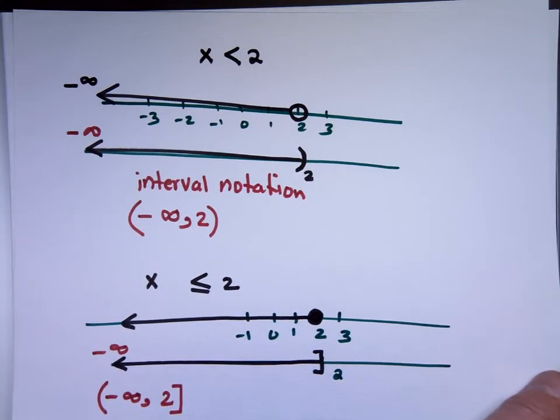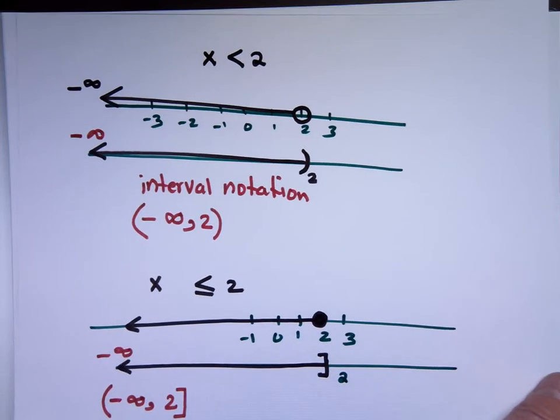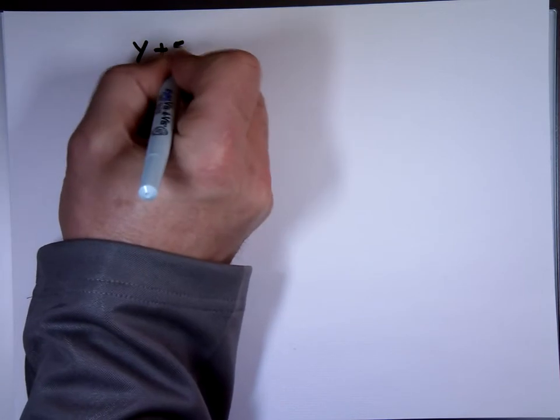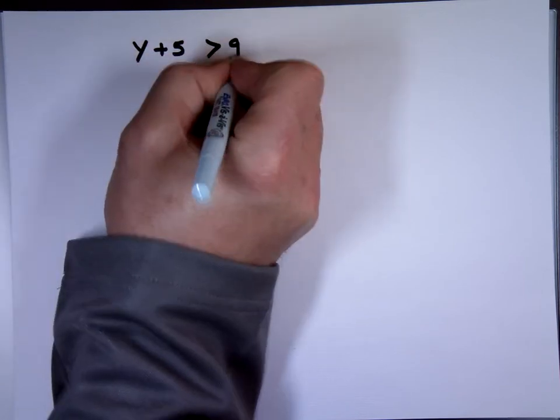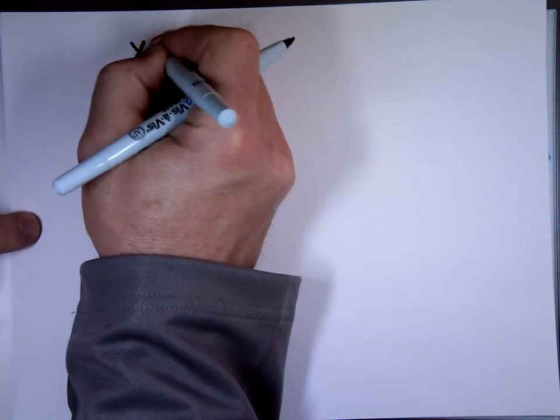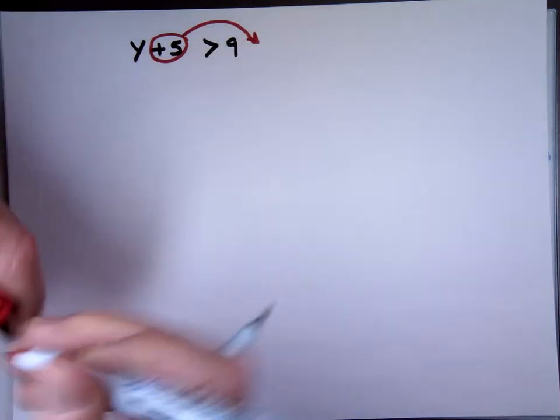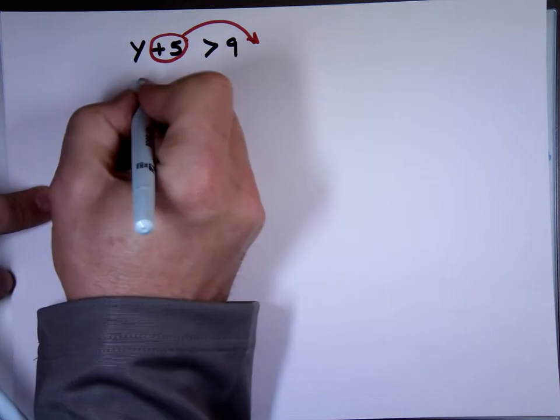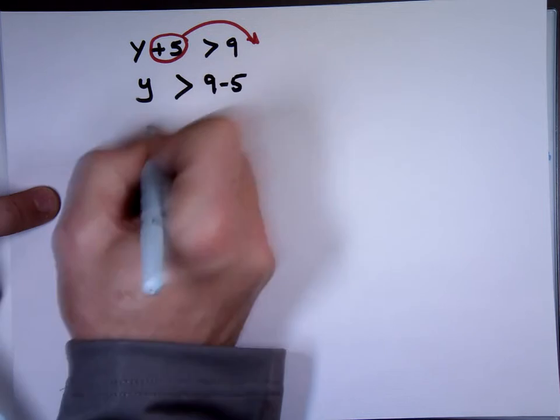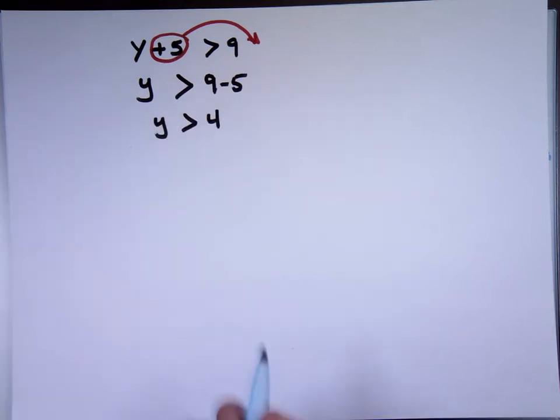Let me take a few problems and solve them. Y plus 5 is greater than 9. We treat that just like an equation. Your goal, all the unknowns on one side, all the numbers on the opposite side. Move the plus 5 there. Change side, change sign. Y is greater than what? 9 minus 5, which is what? 4.